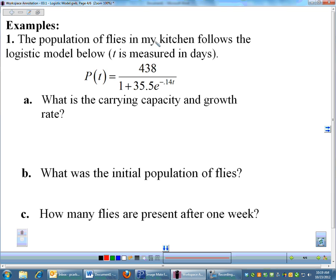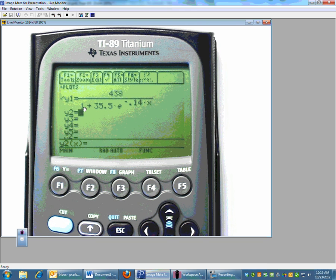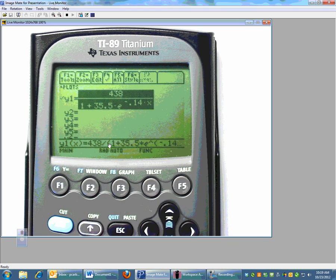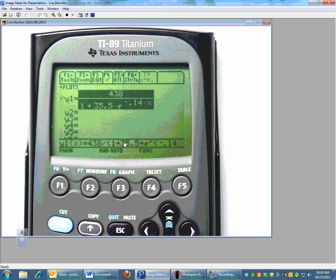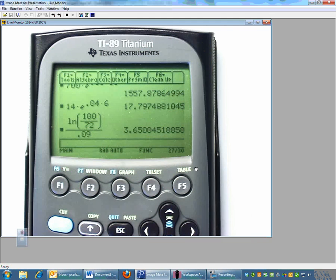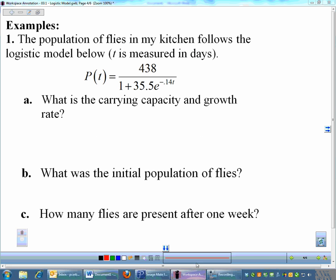Let's do a couple of problems where we actually use the logistic model. Here we have a model that represents the number of flies in my kitchen. You can see it right here. These are definitely calculator-active problems. We will plug the equation into the calculator, and I already have my equation plugged in. Here's 438. This is the logistic model. Make sure when you punch it in, you follow your parentheses. Starting off, what is the carrying capacity and the growth rate? Those I don't need a calculator for. Carrying capacity is the top number, so my carrying capacity is 438.